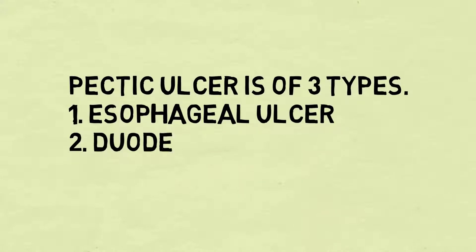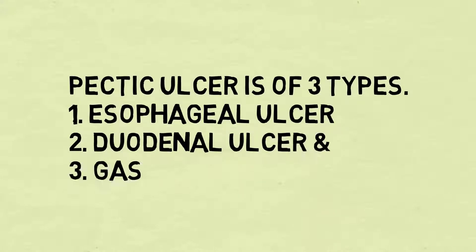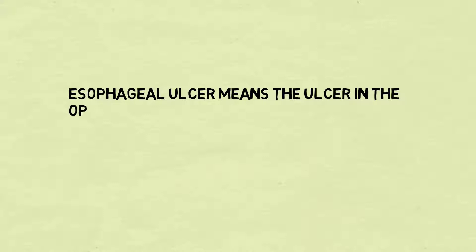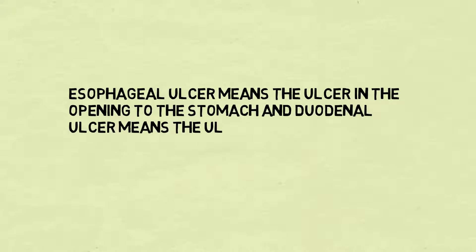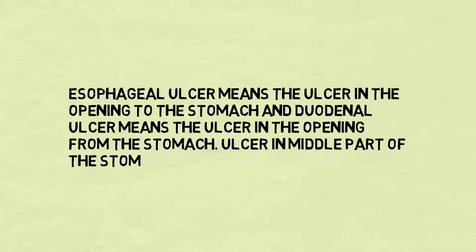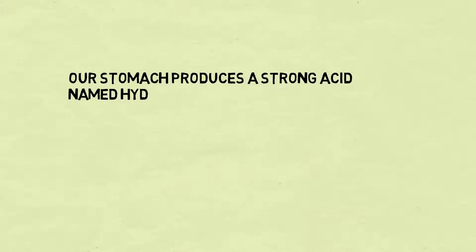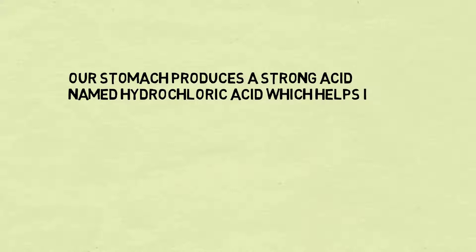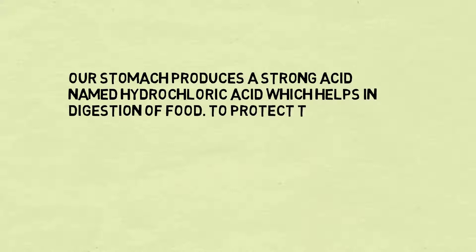The three types are esophageal ulcer, duodenal ulcer, and gastric ulcer. Esophageal ulcer means the ulcer in the opening through the stomach. Duodenal ulcer means the ulcer in the opening from the stomach. Ulcer in the middle part of the stomach is called gastric ulcer.